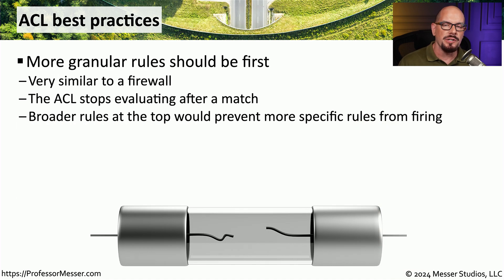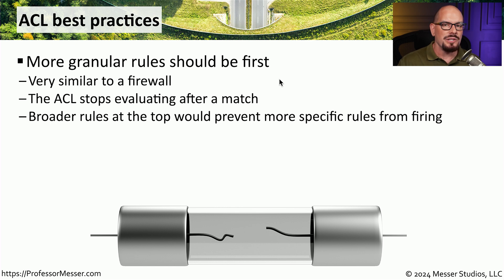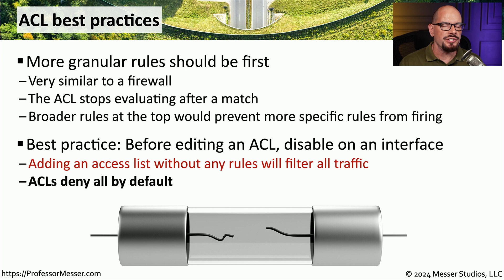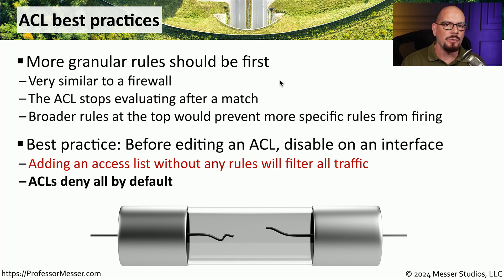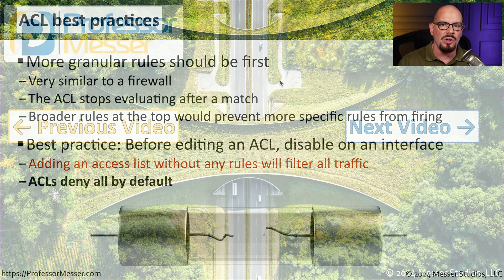Access control lists work very similarly to a firewall rule base. Place more granular rules at the top of the list, since the ACL stops evaluating after finding a match — having common matches at the top makes the network more efficient and allows more granular controls to fire before broader ones lower in the list. As a best practice, if you're making any changes to an ACL, disable the ACL functionality first. It's very possible to make a change that would remove your own access to the switch. Also remember, adding an access list to an interface will by default deny all traffic not specifically listed, so an empty ACL effectively filters all communication.